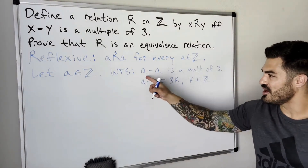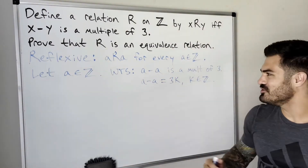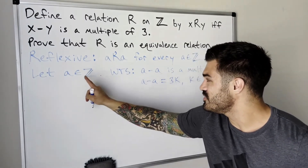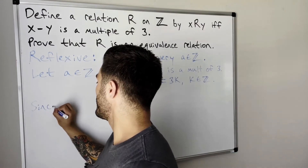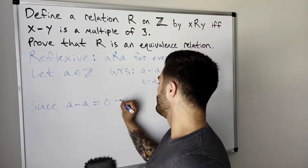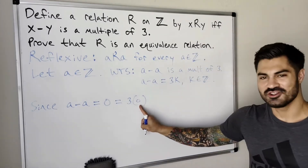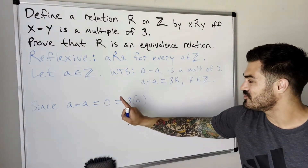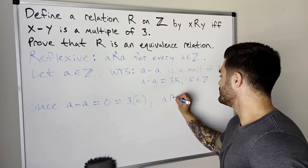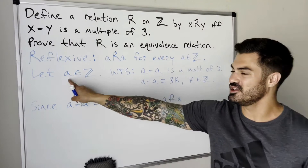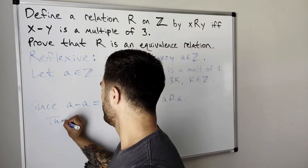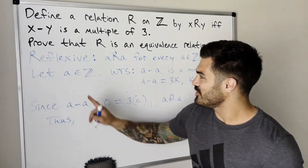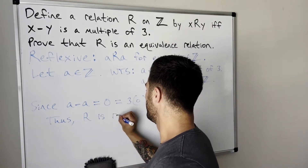How can we show this? Well, we know that for any integer a, a minus a is zero. Let a be an arbitrary integer. Since a minus a equals zero, which is three times zero, and zero is an integer, this literally proves what we wanted — that a minus a equals three times an integer. Since a minus a equals zero, which is three times an integer, a is related to a. Since a was chosen arbitrarily, thus R is reflexive.